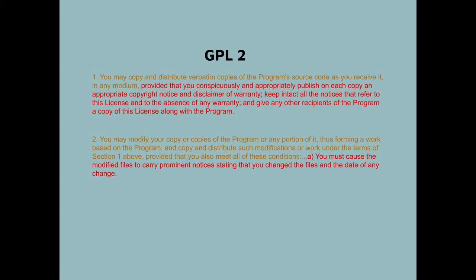Now, licenses like GPL require you to deliver a license notice as well, but also require you to make a note of changes you make to the software. Obviously, these change notices are in the source code. As you can see, Section 1 talks about the license notice that you have to provide. But Section 2 requires that if you modify the software, you must cause the modified files to carry prominent notices stating that you changed the files and the date of any change. Effectively, that usually means making a comment in the source code stating the date that you made changes.